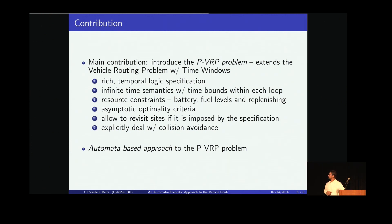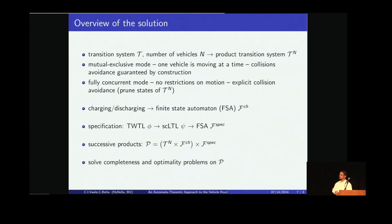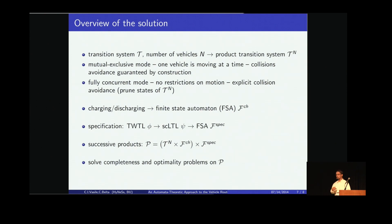We allow vehicles to revisit sites if imposed by the specification, as opposed to classical VRP, and explicitly deal with collision avoidance. The approach is based on automata theory: we start with the transition system modeling the motion of a single robot, then produce a product automaton capturing the motion of all robots simultaneously, in two modes — a mutually exclusive mode where one vehicle is active at a time, and a fully concurrent mode. Charging and specifications are each encoded as finite state automata, and we produce a product automaton on which we solve the completeness and optimality problems.